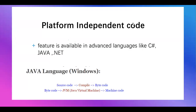Now we can look at platform independent code. Platform independent means it is completely independent — if we write our code on Windows, the same code can be run on macOS or Unix OS. It won't be dependent on the operating system. When we compile that code, bytecode will be generated. That bytecode can be given to friends, and they will run it in their own system.